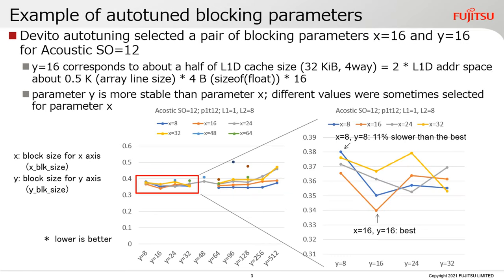This slide shows examples of blocking parameters selected for the 12th-order acoustic model. The Devito auto-tuning evaluates possible combinations of parameters for X and Y dimensions via five-timestep calculation trials and selects the best one. Smaller parameters tend to achieve better performance, likely because load imbalances among threads occur for larger blocking sizes. The performance difference suggests that about 10% improvement concerning L1 cache usage can be expected from Devito auto-tuning.